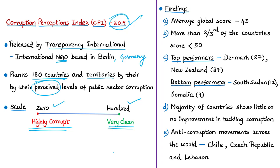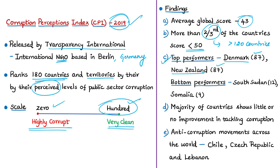The key findings of the 2019 index: the average score for 180 countries is just 43, and more than two-thirds of countries scored below 50, meaning corruption is high in more than 120 countries. The top performers are Denmark and New Zealand with a score of 87 each. The bottom performers are Somalia with a score of 9 and South Sudan with a score of 12. The index reveals that a majority of countries are showing little or no improvement in tackling corruption.